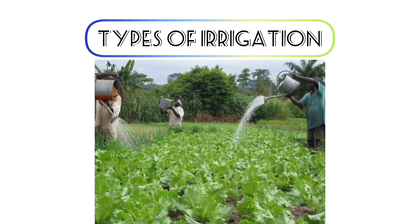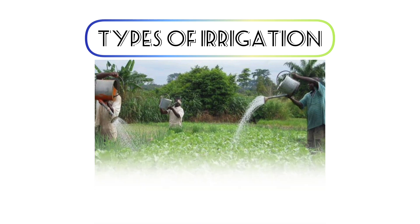Finally, manual irrigation, where water is scattered evenly around the field with the help of manual power such as labours using watering cans.